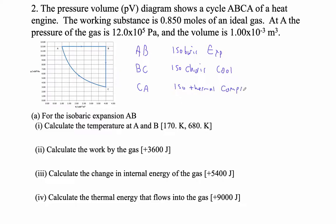Okay, so for the isobaric expansion AB, calculate the temperature at A and B. All right, so for A and B, you're going to define the temperature at A. You're going to go pressure at A, volume at A equals N times R times T of A.